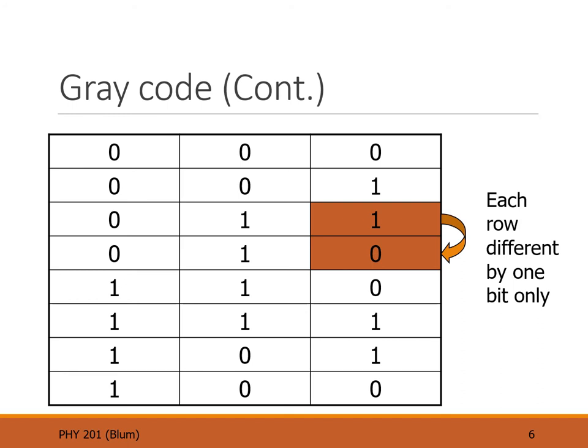Starting from the top we see 0, 1, 3, 2, 6, 7, 5, and 4. All the numbers are there, all the combinations are there, but they're clearly not in our counting order. The important property of this ordering is that from one row to the next, only one bit changes. In the top row 000 going to the next row 001, only one bit changed. Going from the second to the third row, only the middle bit changed.